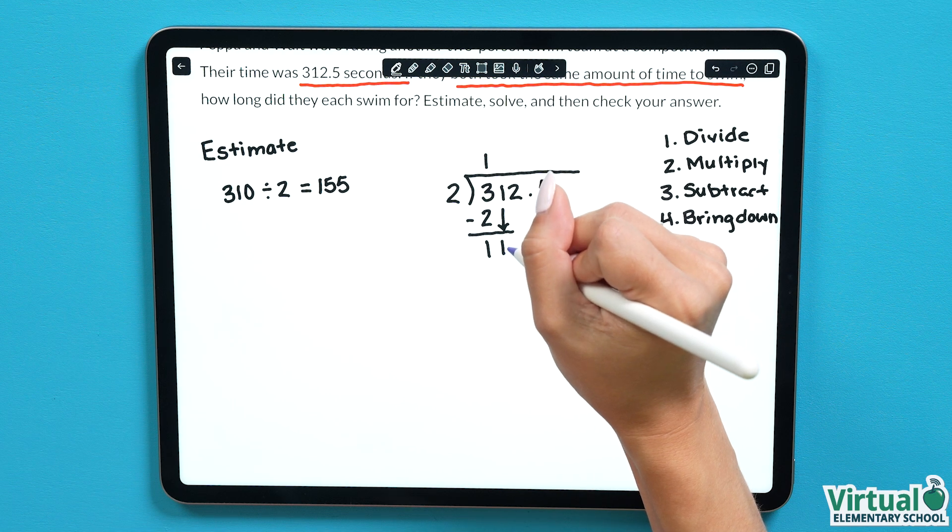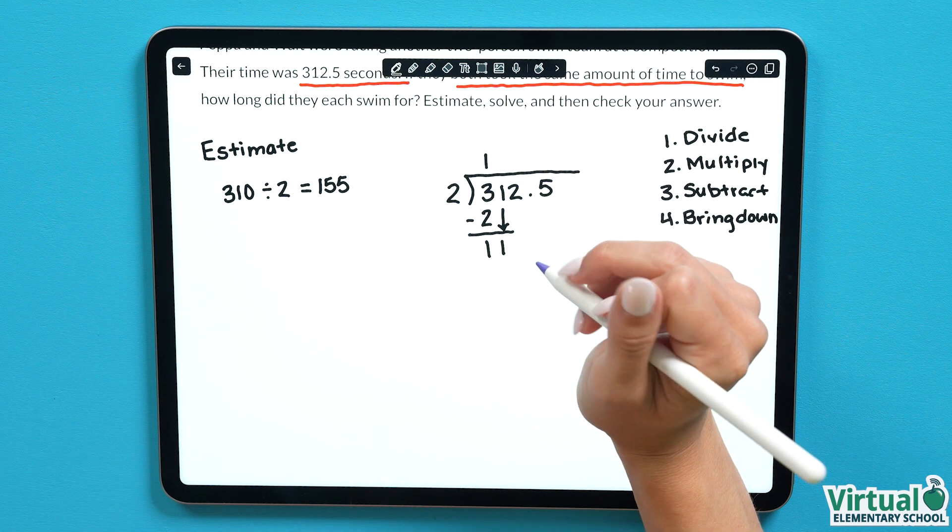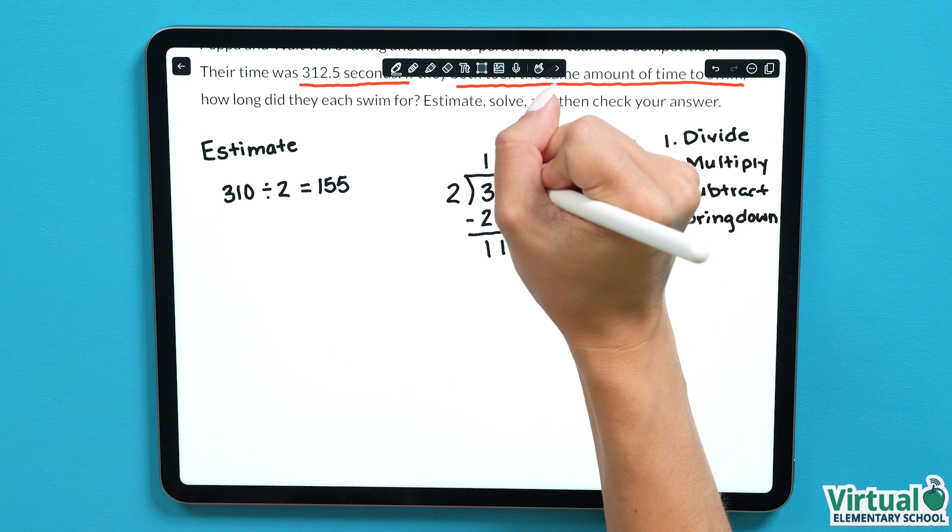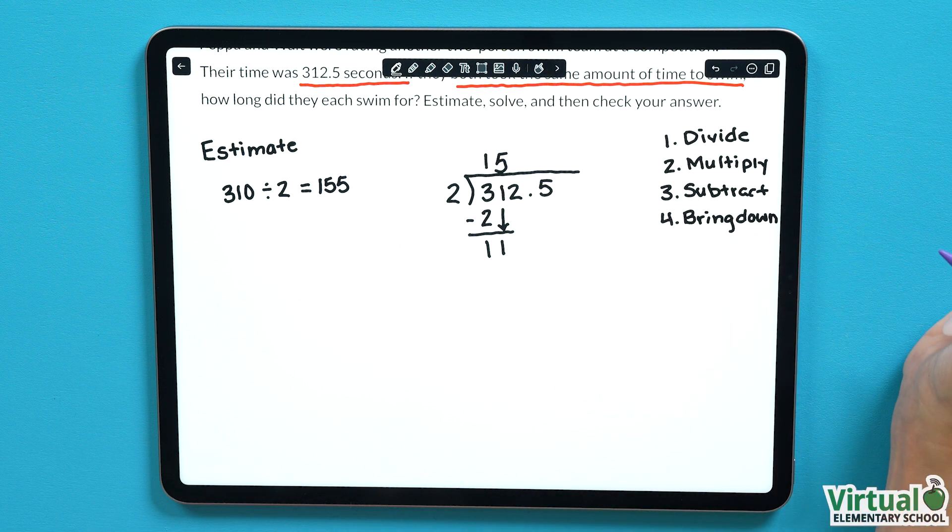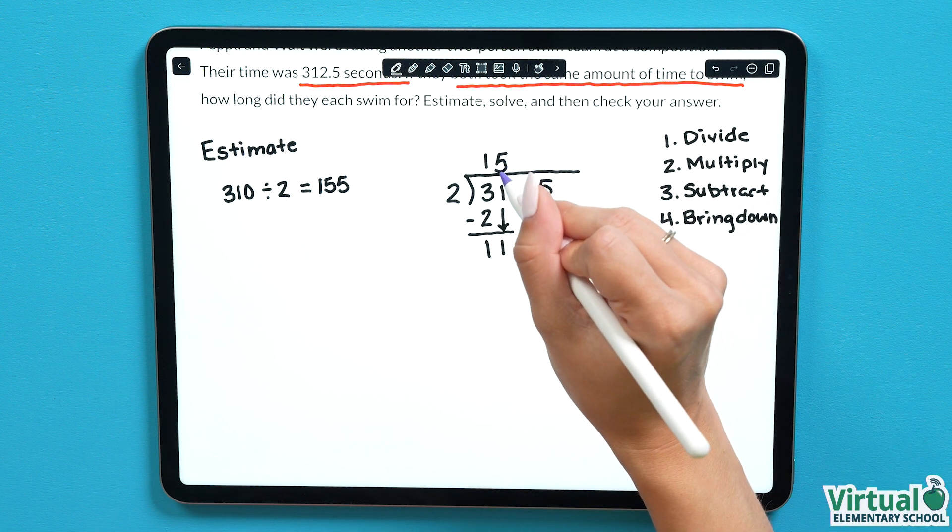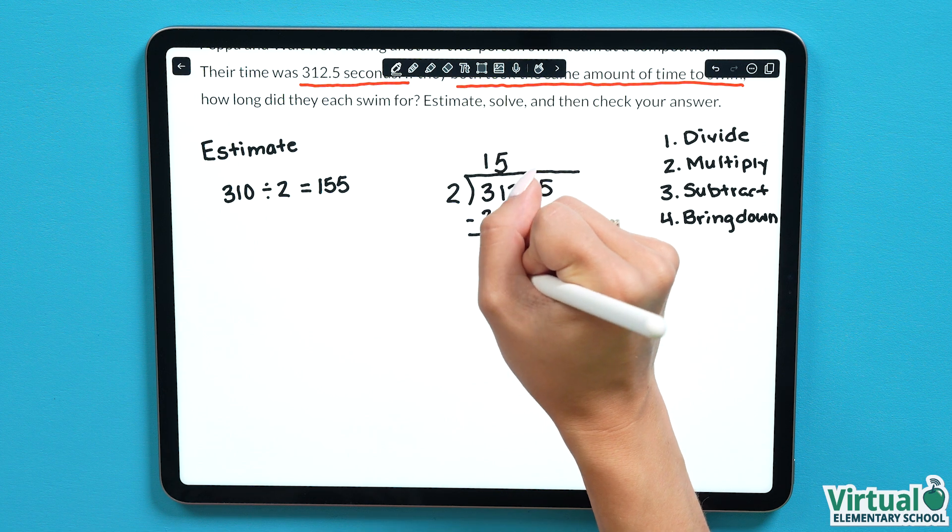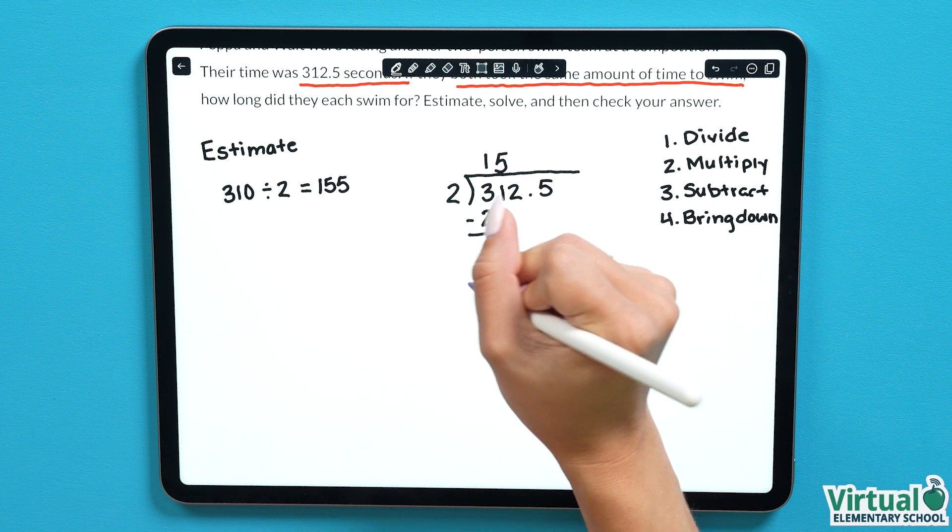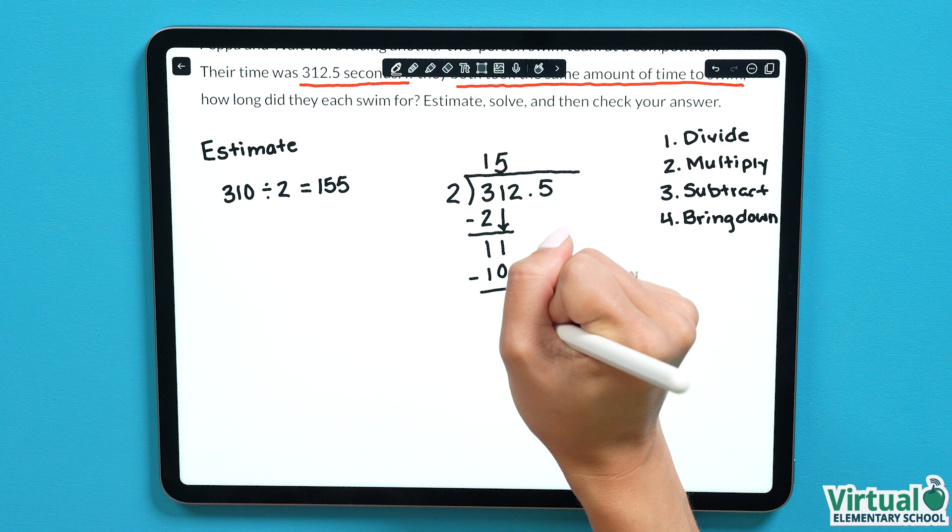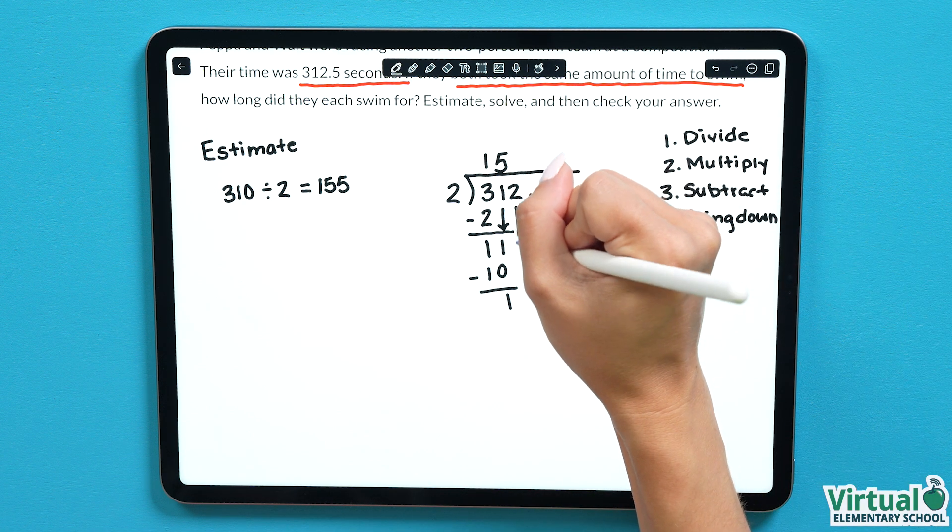Now we have an 11 here, 11 divides by 2 5 times evenly, so we add a 5 to the top of our line. 2 multiplied by 5 equals 10. 11 subtract 10 equals 1, and we bring down our next number.